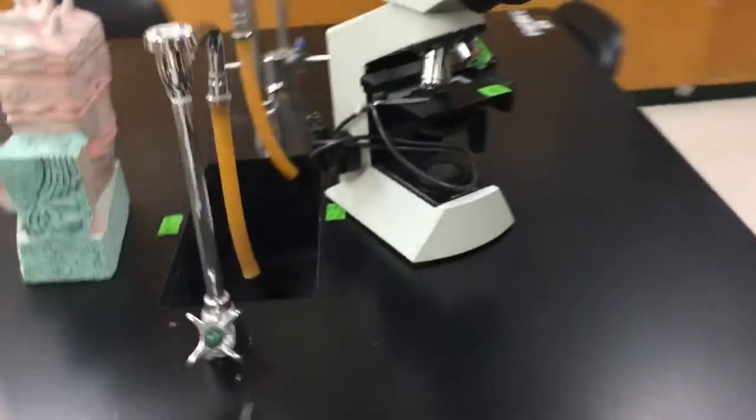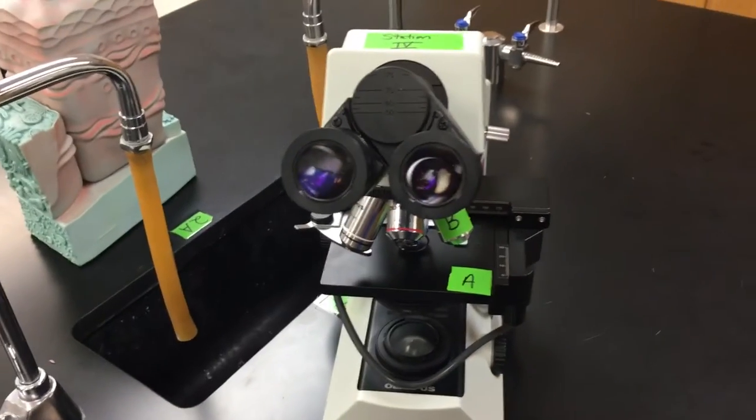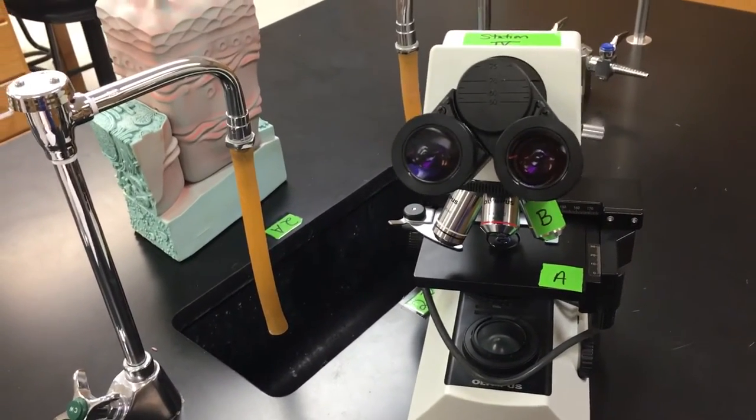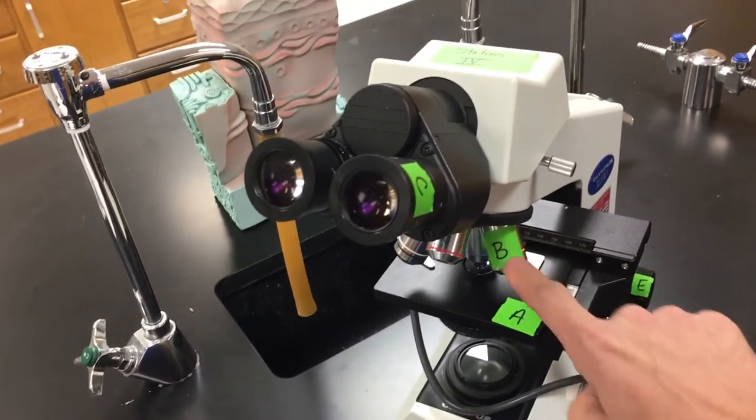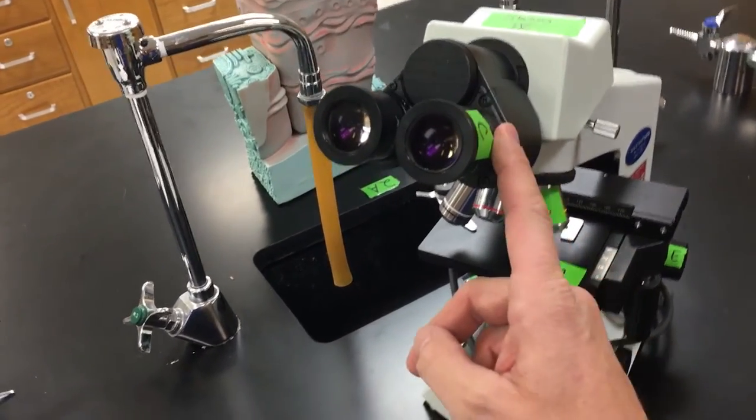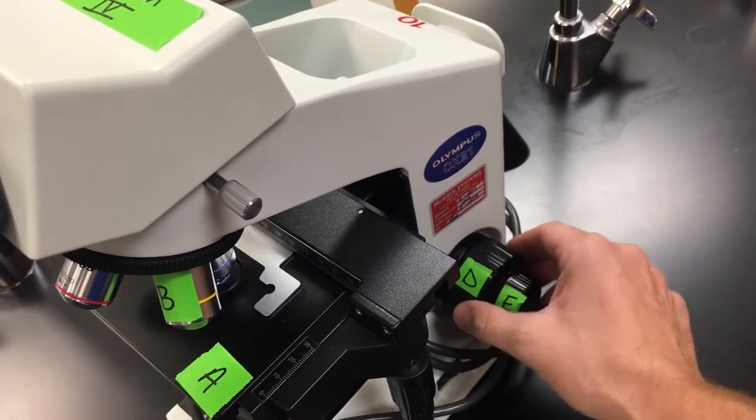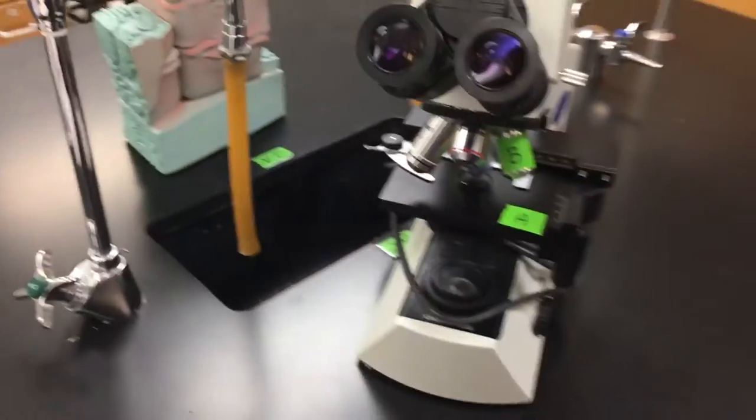Moving on to section 4, this is the components of the microscope. A was the stage. B was the objective lens. C was the ocular lens. D was the rough or coarse adjustment. And then E was the fine adjustment.